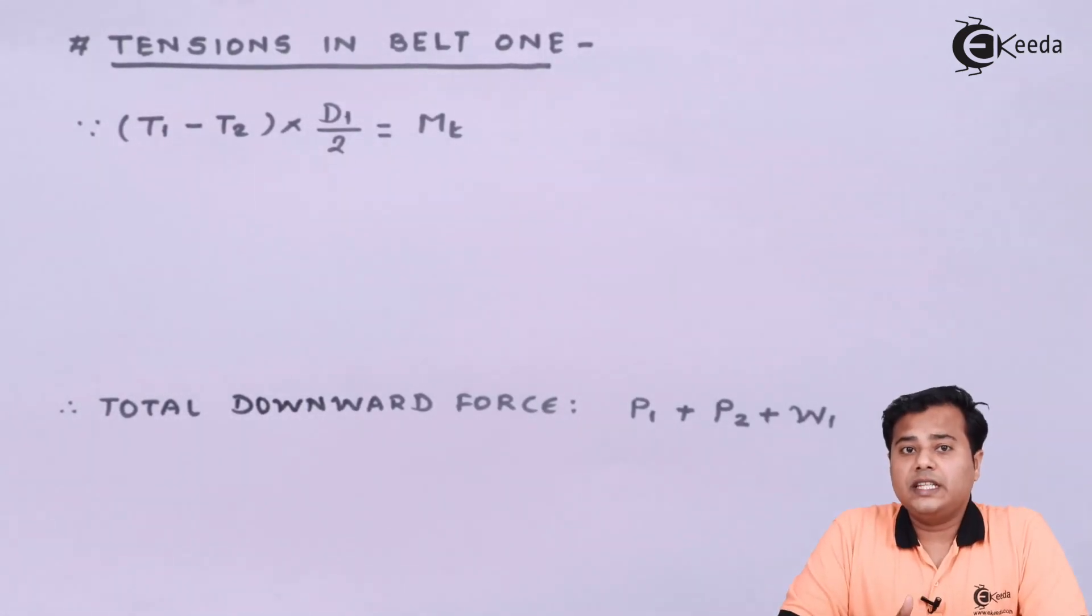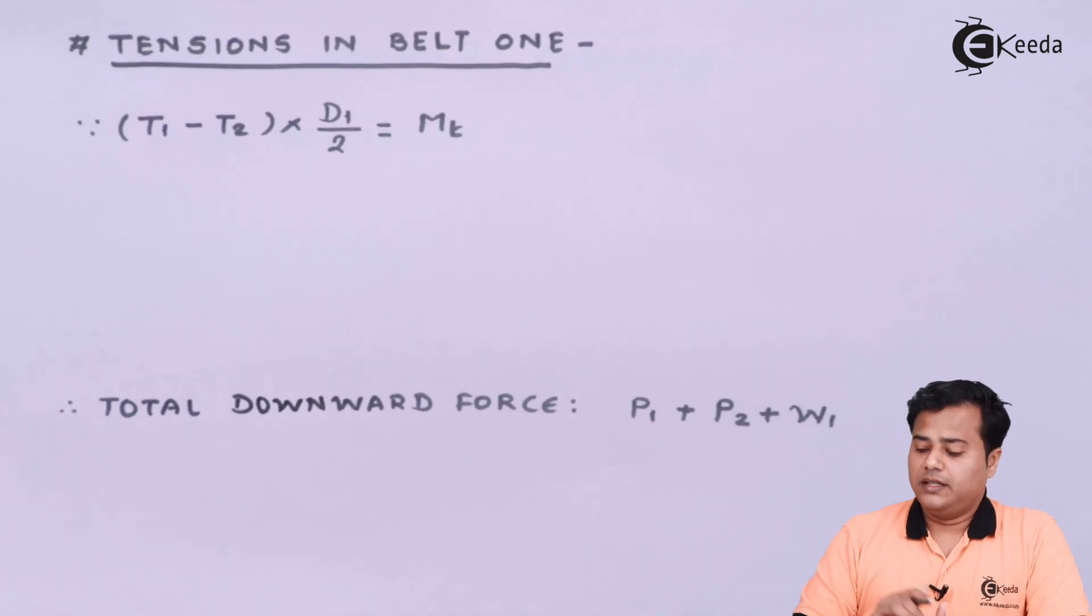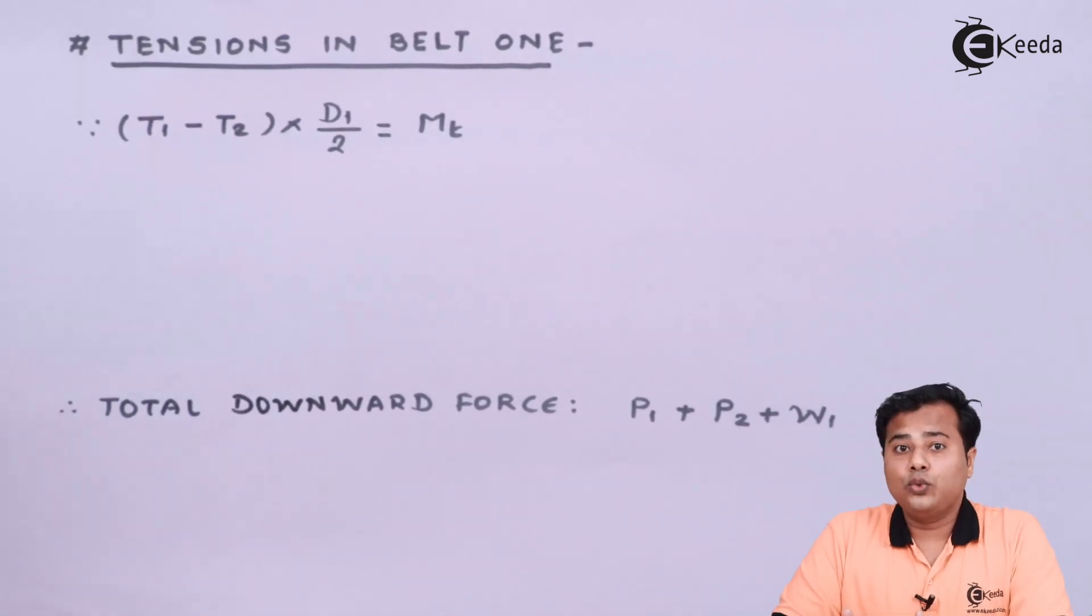So for this particular torque we need to go for the design. There comes the next thing, tensions in the given belts. We know that there are two pulleys. So there are two belts. And that's why the tension between them will vary slightly. The only thing common is one of the tensions will be tight side tension. Another tension will be slack side tension.